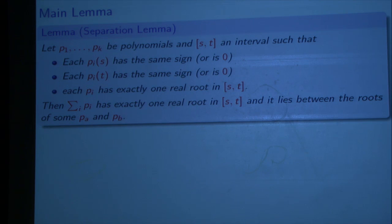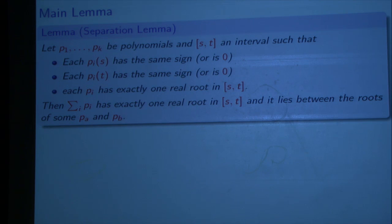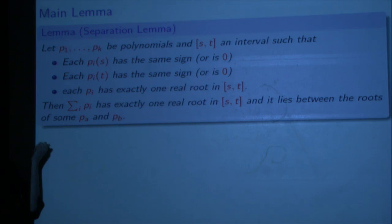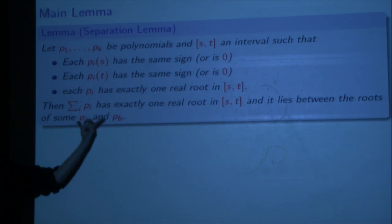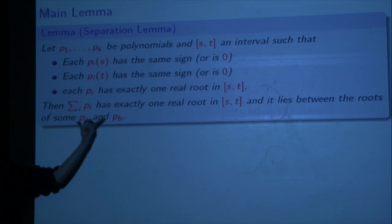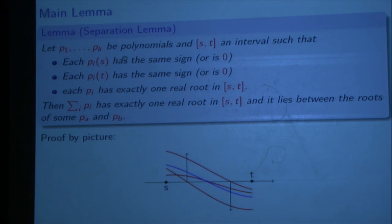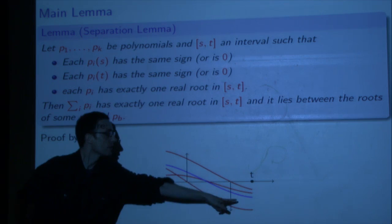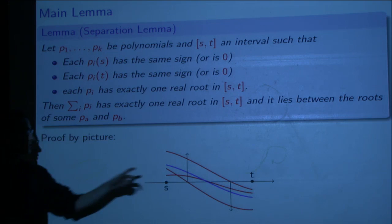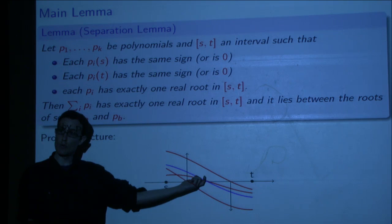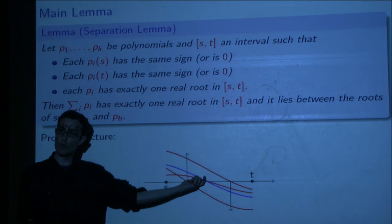We have what we call a separation lemma. If you have a collection of polynomials and an interval (s, t) such that all polynomials have the same sign at one end and the same sign at the other end, and all of them cross the real axis at exactly one point in that interval, then when you sum them up, the sum has exactly one crossing in that interval. Furthermore, that crossing lies between the crossings of two of the original polynomials. The proof is easy by picture: all polynomials are positive at one end, negative at the other, so somewhere in between the sum is zero. At the root of the sum, at least one polynomial is non-negative and at least one is non-positive, and those two give root bounds on each side.